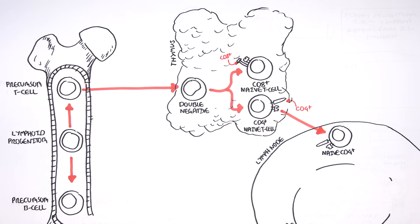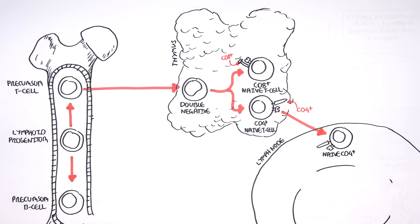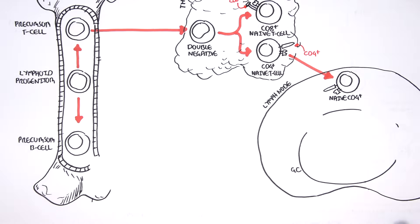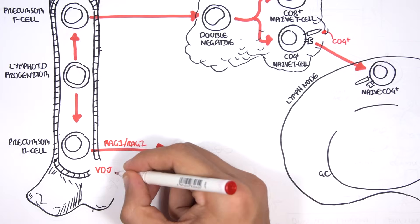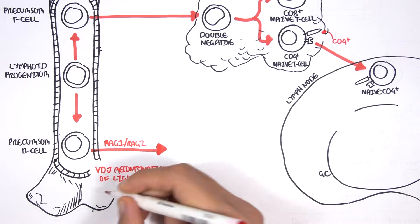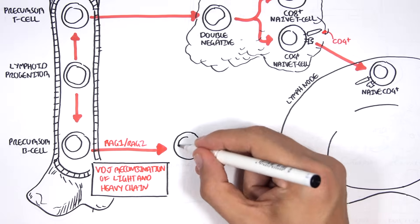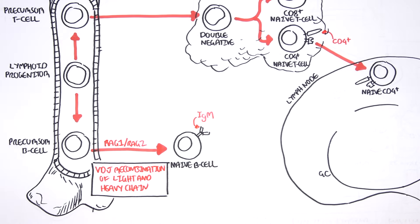Let us look at the bone marrow and follow the precursor B cell. With the help of the enzyme RAG1 and 2, the precursor B cell in the bone marrow undergoes VDJ recombination of light and heavy chains to form a naive B cell with a membrane-bound IgM antibody. The naive B cell will have a unique, specific type of antibody on its surface for a specific type of antigen. The naive B cell leaves the bone marrow and proceeds to the lymph node.